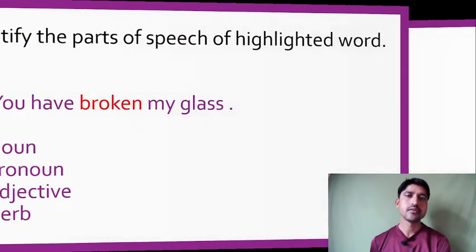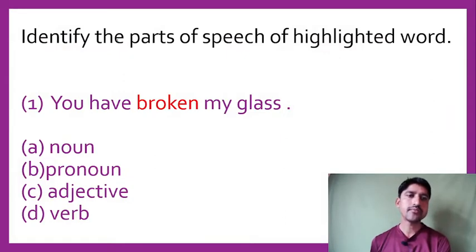First question: identify the parts of speech of the highlighted word. You have broken my glass. The word 'broken' here - we have 'have' which is a helping verb, and we have the third form here. This is a verb. 'Have broken' - broken is the verb form.